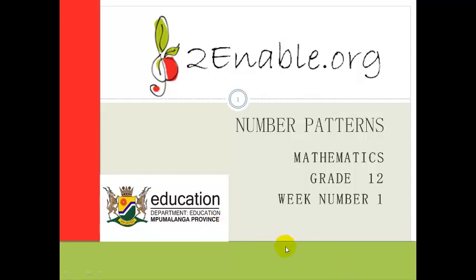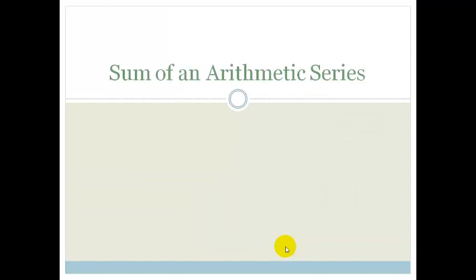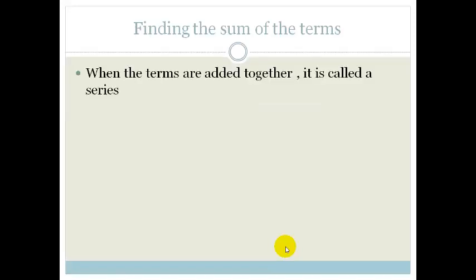Good day, Grade 12s. Welcome to your second lesson on Number Patterns. In this lesson, we're going to extend your knowledge of arithmetic sequences to arithmetic series. There's a difference between arithmetic sequences and arithmetic series. When the terms are added together, it is called a series. So if you've just got 2, 4, 6, 8, we call that an arithmetic sequence. But if we start adding them — 2 plus 4 plus 6 plus 8, etc. — then you have an arithmetic series.